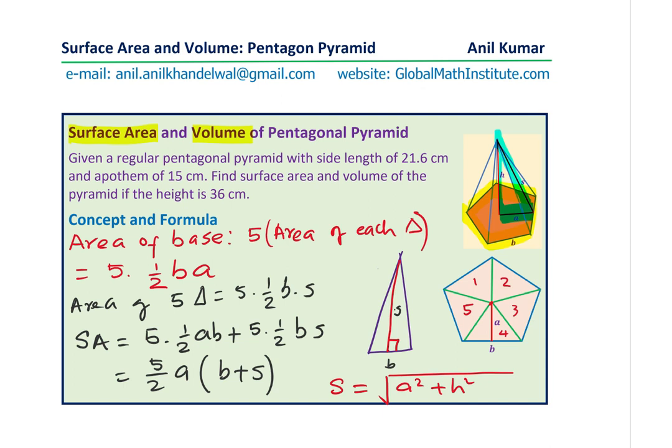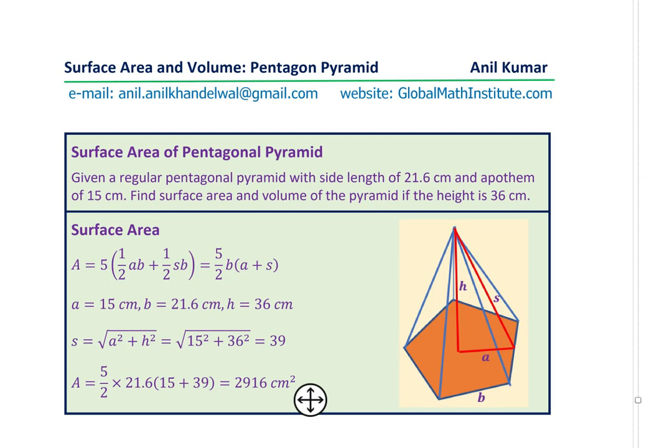We know all the values. Let's now calculate the surface area. So as I was saying, the surface area A will be five times half of AB plus half of SB, slant height into the base.